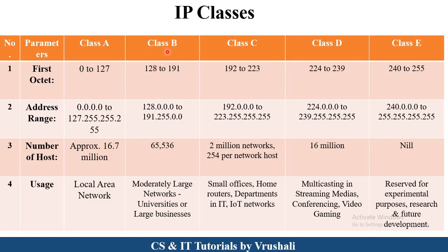Similarly, the range of Class B is 128 to 191. Class C address range is 192 to 223. Class D range is 224 to 239 and Class E range is 240 to 255. This means starting with 128 and ending with 191, all addresses in between are present in Class B.